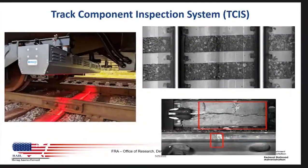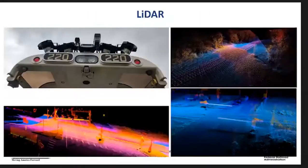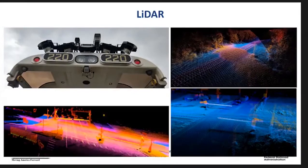The track component inspection system is again a machine vision system that looks at the conditions of the ties and components of the tie and rail seat interface. We're looking at the conditions of ties, fasteners, tie plates, anchors, and so forth. The lidar on the car is primarily used for assessment of grade crossings, but it's also used for other purposes such as obstruction detection in the profile, ballast profile, and so forth.